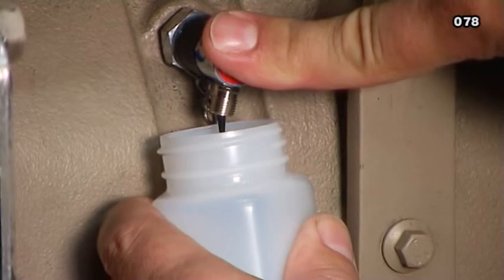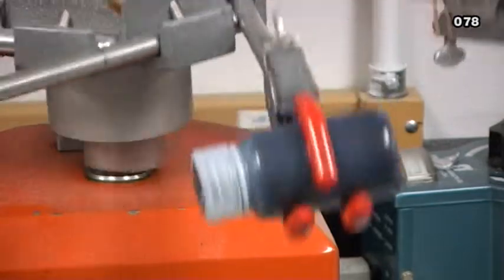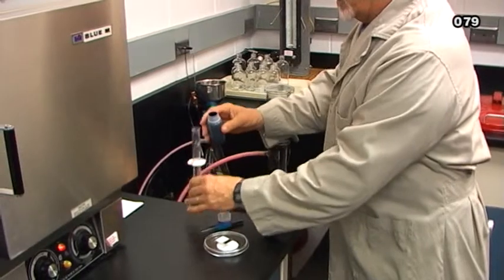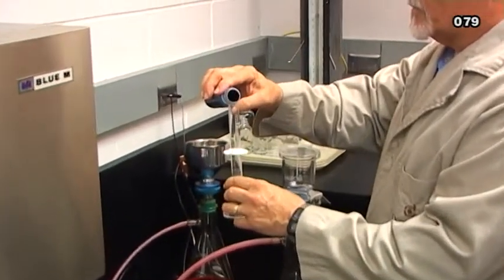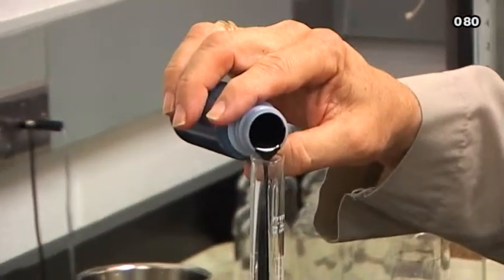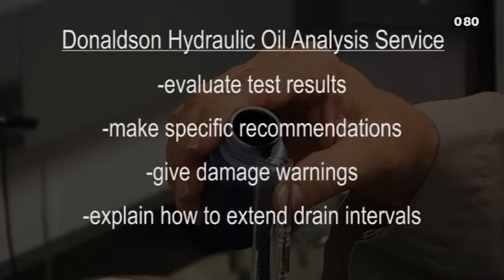Analysis of your hydraulic oil is another important part of protecting and maximizing the life of hydraulic systems. Hydraulic oil from equipment in regular use should be sampled at 500 hours or monthly. The Donaldson Hydraulic Oil Analysis Service, which is described in Module L6, includes an evaluating of the test results and specific recommendations and warnings of imminent component damage where warranted. You can also learn how to extend your hydraulic oil drain intervals.